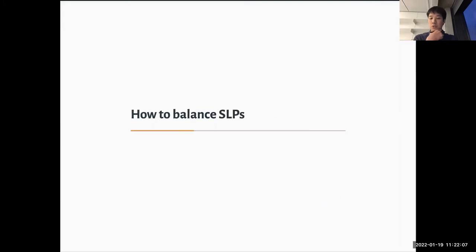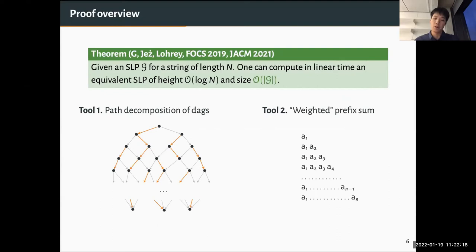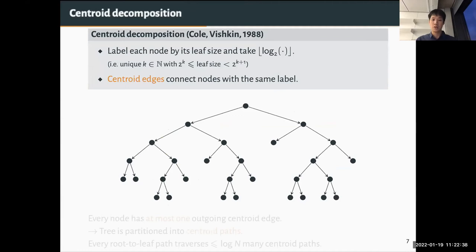For the next few minutes I want to give a proof sketch of the balancing result. It has two parts. The first is a path decomposition: we view our SLP as a DAG and decompose it into a disjoint union of paths; this decomposition will have logarithmic height. The second tool is something we call weighted prefix sum. Let's start with the path decomposition. For trees, many of you may already know techniques like heavy-path decomposition; we use something similar called centric decomposition.